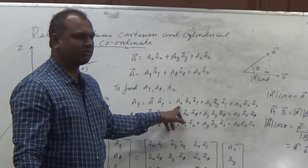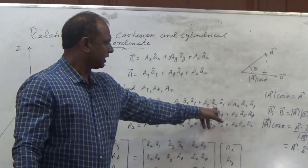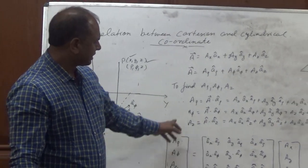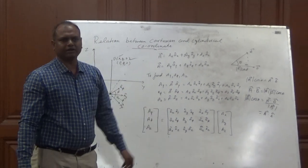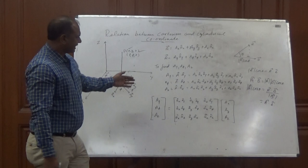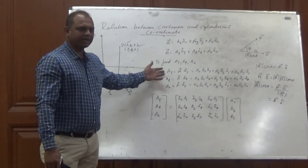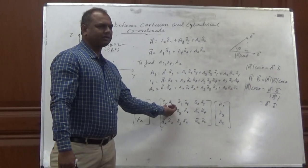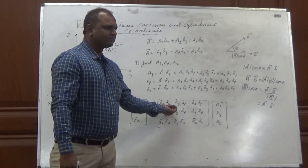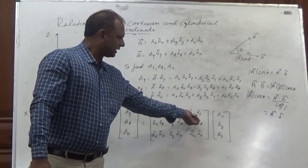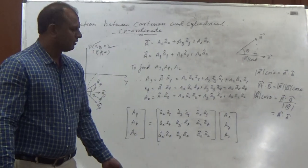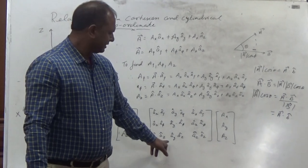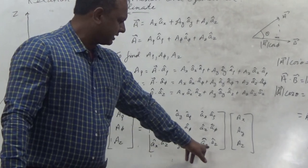We can now write in matrix form. The components A-rho, A-phi, and AZ are expressed through a matrix of dot products of unit vectors: AX·A-rho, AY·A-rho, AZ·A-rho in the first row; AX·A-phi, AY·A-phi in the second row; and AX·AZ, AY·AZ, AZ·AZ in the third row, multiplied by the Cartesian components AX, AY, AZ.